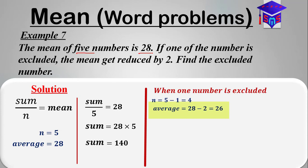The question is saying if one number is excluded, the average is reduced by 2. So our new average will be the old average minus 2, which is 26. That's the average for the five numbers minus 2.